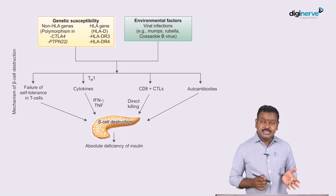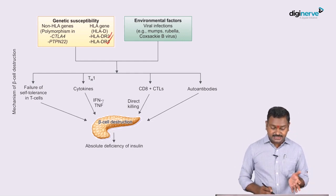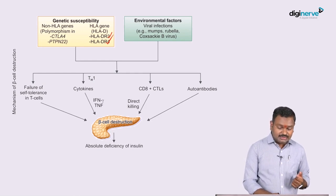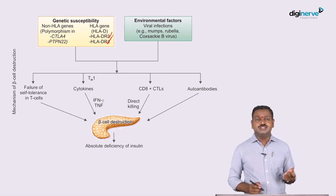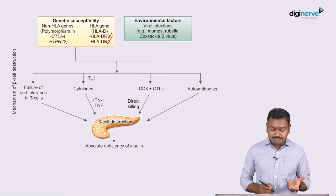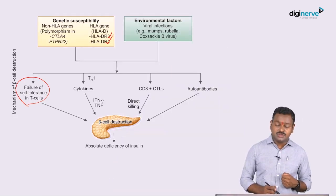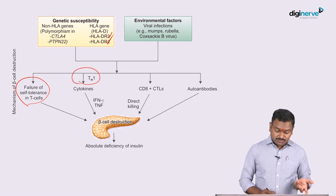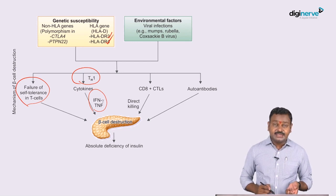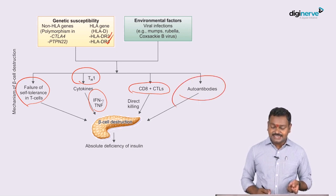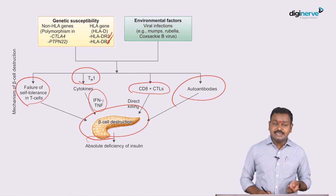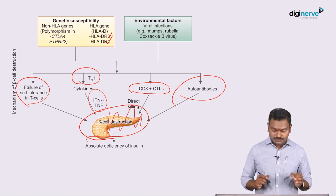There is a genetic predisposition with HLA-DR3, DR4, and DR9, as well as non-HLA gene polymorphisms. A stimulus such as viral infections — mumps, rubella, coxsackie — can trigger the process. This leads to failure of self-tolerance and autoimmunity: T-helper cells get stimulated, cytokines like interferon and tumor necrosis factor are activated, CD8 cells cause apoptosis, and auto-antibodies are produced — all eventually resulting in beta cell destruction and absence of insulin.